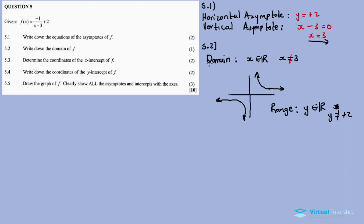For a hyperbola, the domain is always x element of real numbers excluding the vertical asymptote. Range is y element of real numbers excluding the horizontal asymptote. This is the domain.